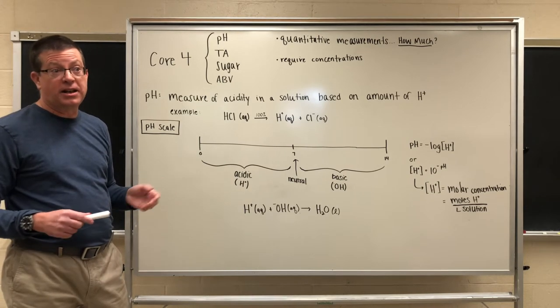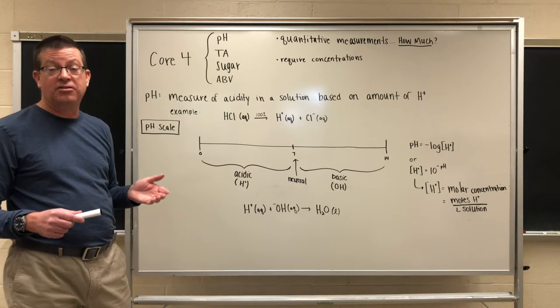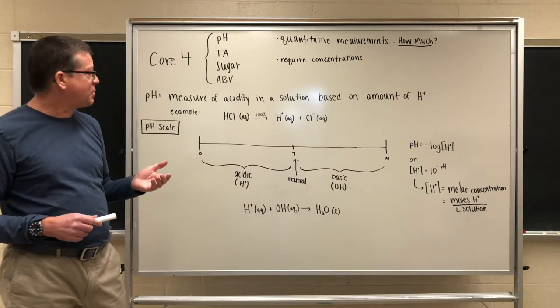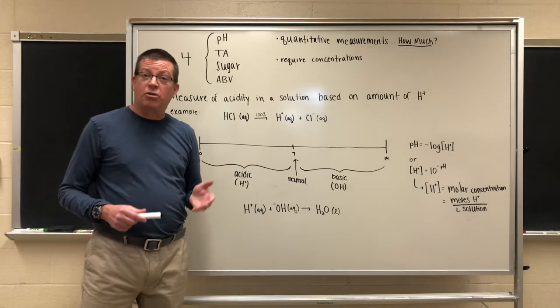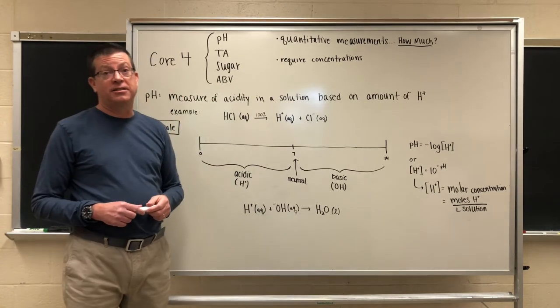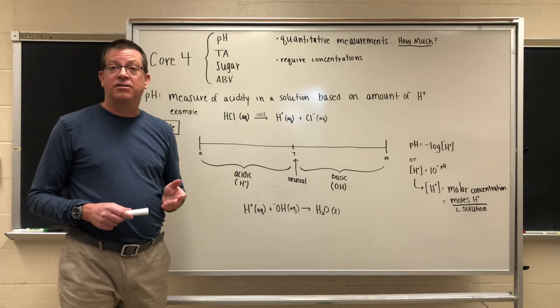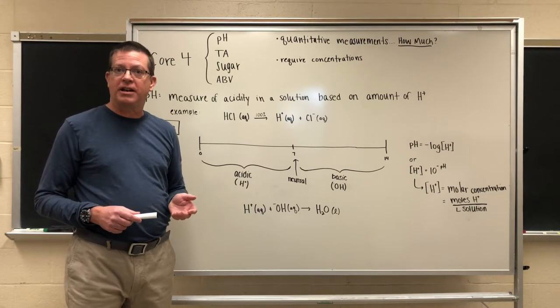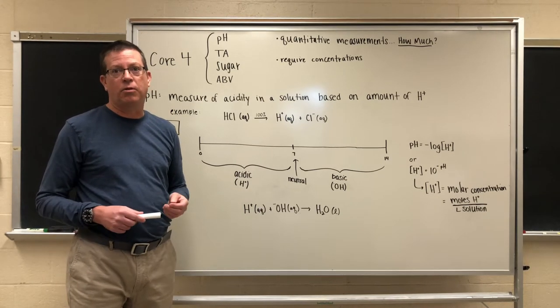To better understand this we have to understand what an acid actually is. In chemistry one simple definition of an acid is this: An acid is considered to be a good source of hydrogen ion in aqueous solution. That means dissolved in water.